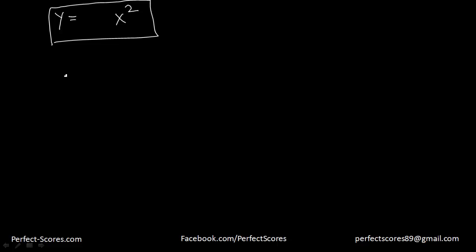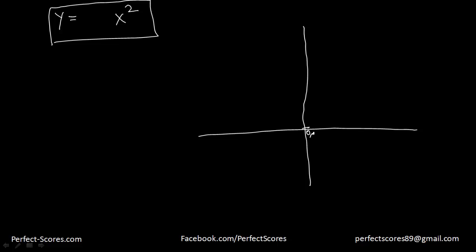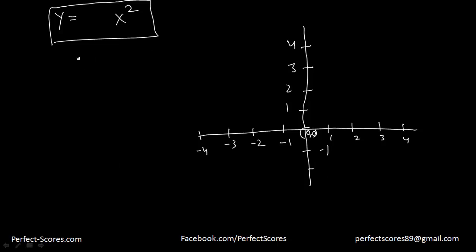Let me go ahead and plot that for you. We're going to plot y is equal to x squared, with the values of x and the values of y, and then plot those values. So let's say this is 0, and we have 1, 2, 3, and 4 on one side and minus 1, minus 2, minus 3, and minus 4 on the other side of the x-axis, and 1, 2, 3, 4 on the y-axis. Now when x is 0, y is 0 because y is equal to x squared — so this is one point.